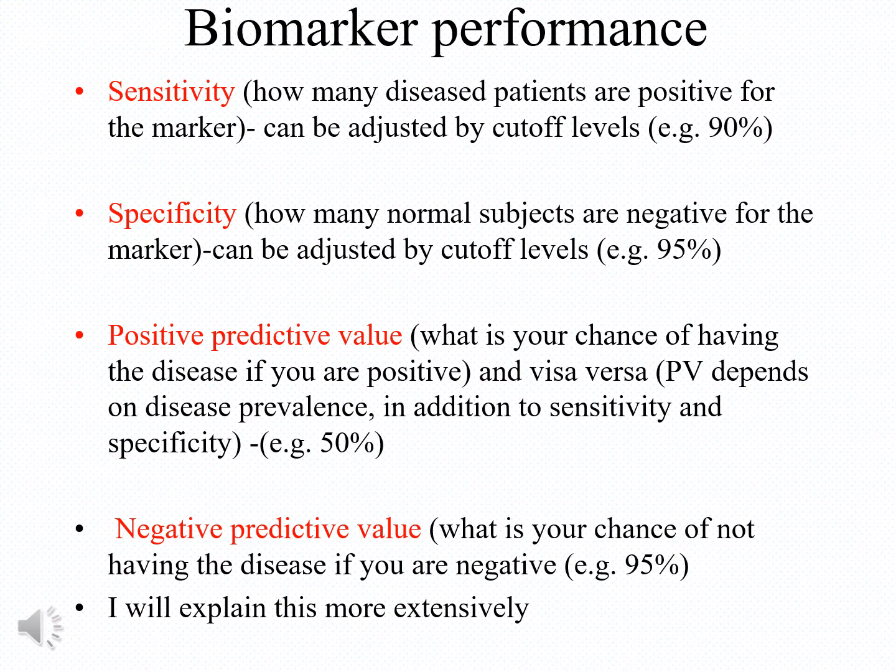This means that if 5 out of 100 normal people are positive for the disease — that is, false positives — the specificity is defined at 95%.